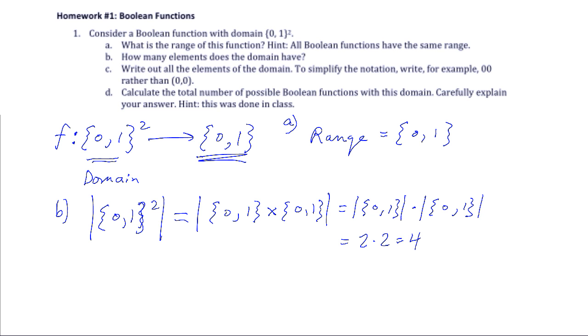Part C says write the elements of the domain out. To simplify the notation, use zeros and ones next to each other rather than putting them in ordered pairs or lists. So the domain {0,1}² can be written like this: 00, 01, 10, 11.